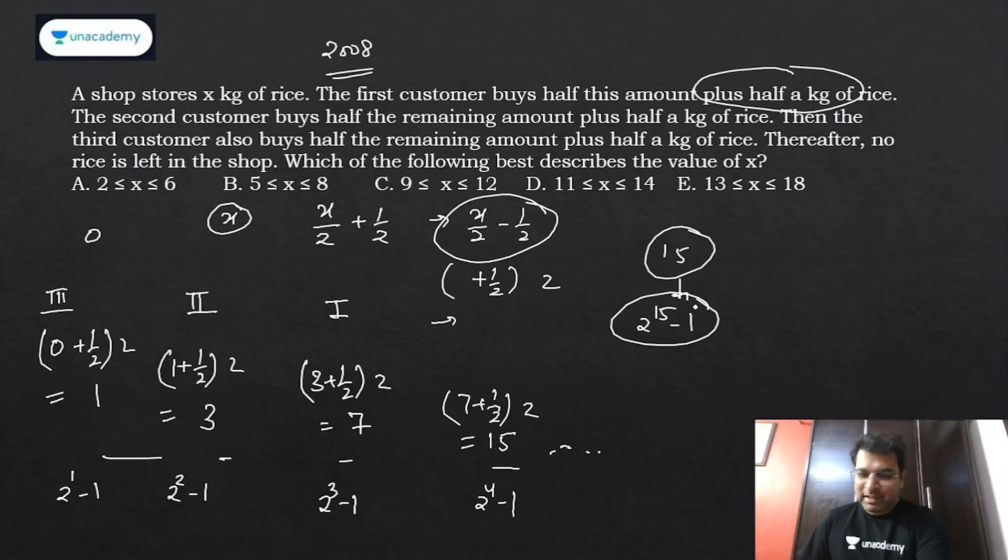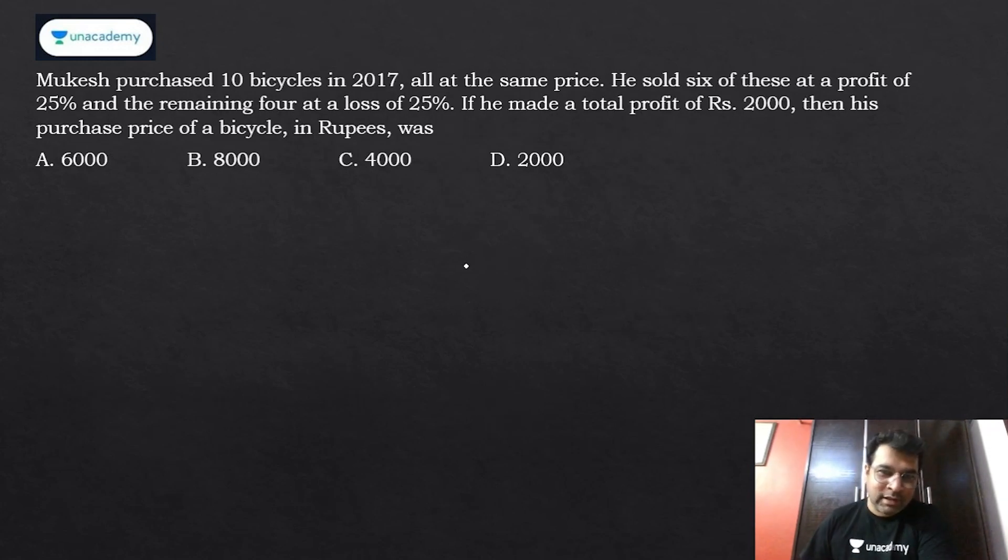Moving to the third and last question. This is also CAT 2019. Mukesh purchased 10 bicycles in 2017, all at the same price. He sold six of them at a profit of 25%, remaining four at a loss of 25%. Overall profit is 2000, then what is the purchase price of a bicycle?